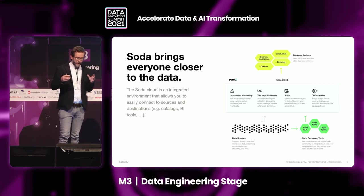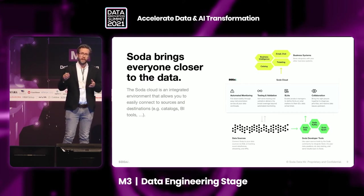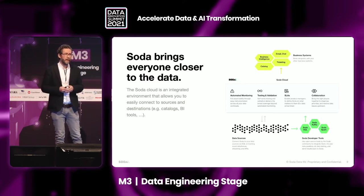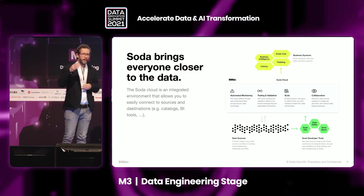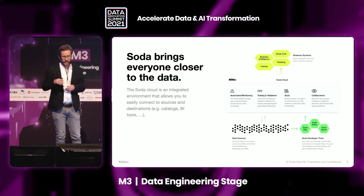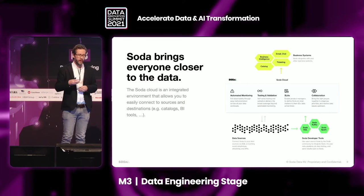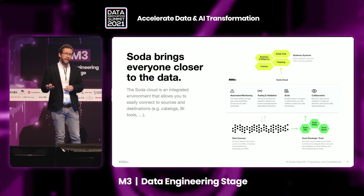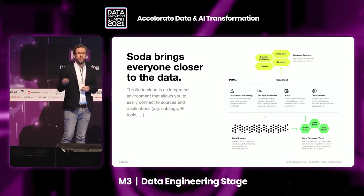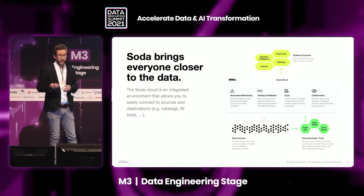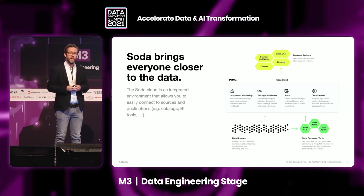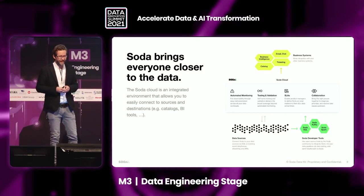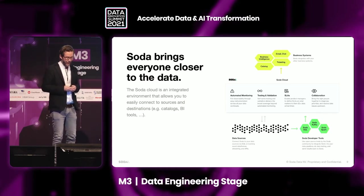Soda Cloud becomes that central single pane of glass for data quality. We store the metrics and test results so you can compare them over time — for example, how your invalid social security numbers are evolving over time. You can see a diagram, and you can set alerts and warnings to share via email or chat. As of today, we provide a native Slack integration so whenever there's a data quality issue, you can post it to your team channel. We are extending that throughout Q4 — Microsoft Teams is something that's requested a lot.